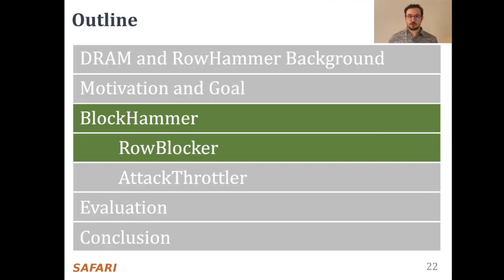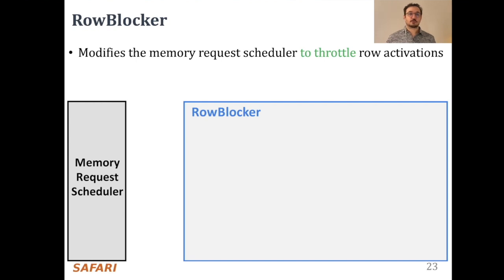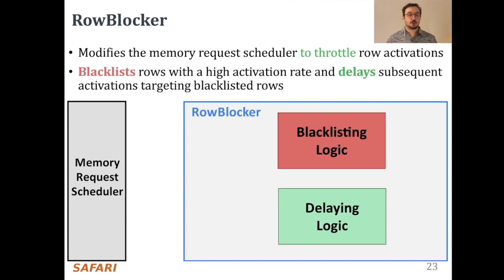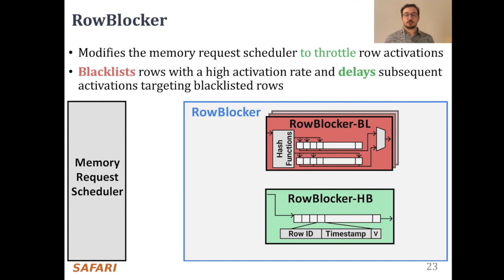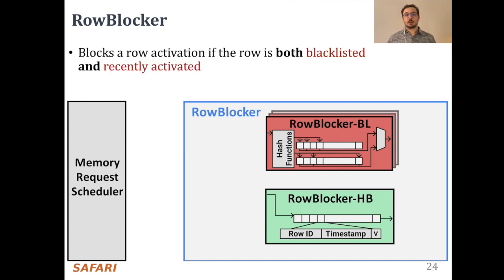I will explain how Row Blocker works next. Row Blocker modifies the memory request scheduler to throttle row activations that could lead to bitflips. To do so, it blacklists rows with high activation rates and delays subsequent activations targeting them. We call the blacklisting logic Row Blocker BL and the delaying logic Row Blocker HB. To throttle row activations with a high activation rate, Row Blocker blocks a row activation if the row is both blacklisted and recently activated.